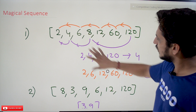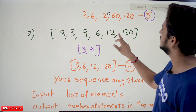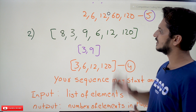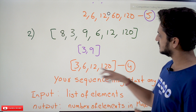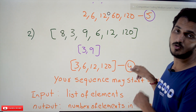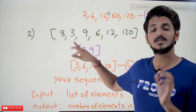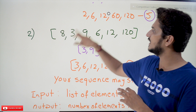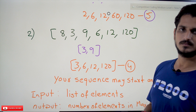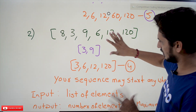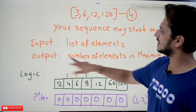For better understanding, let's discuss one more example. The list is: 8, 3, 9, 6, 12, 120. The sequence 3, 9 is one possibility. The sequence 3, 6, 12, 120 is another. The maximum number of elements in any sequence is 4 — that is the output. The key point: a sequence may not start from the beginning of the list; it can start anywhere. Input is the list of elements; output is the count of elements in the maximum sequence.